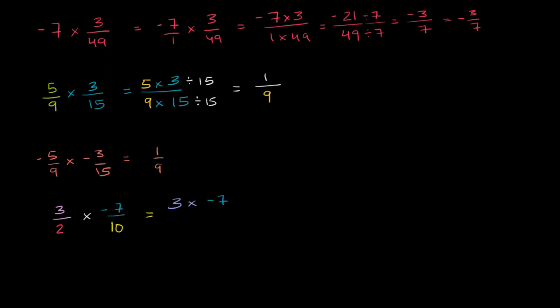And our denominator is going to be 2 times 10. So this is going to be the numerator, positive times a negative is a negative. 3 times 7, negative 7 is negative 21. Negative 21. And the denominator, 2 times 10, well that is just 20. So this is negative 21 over 20, and you really can't simplify this any further.